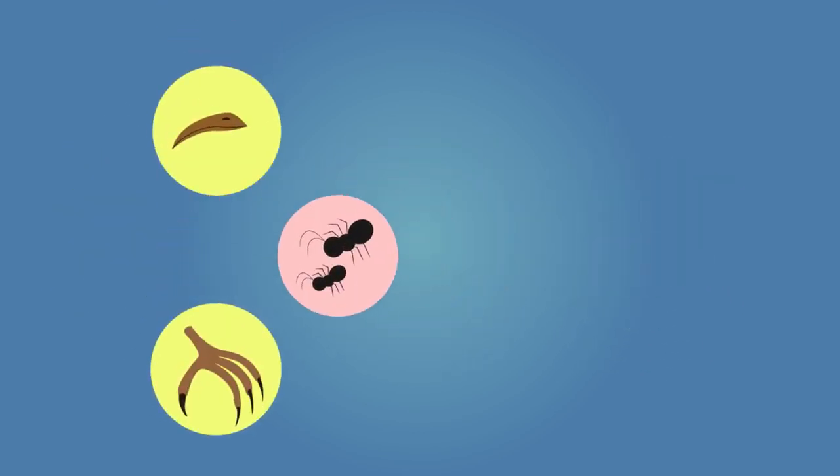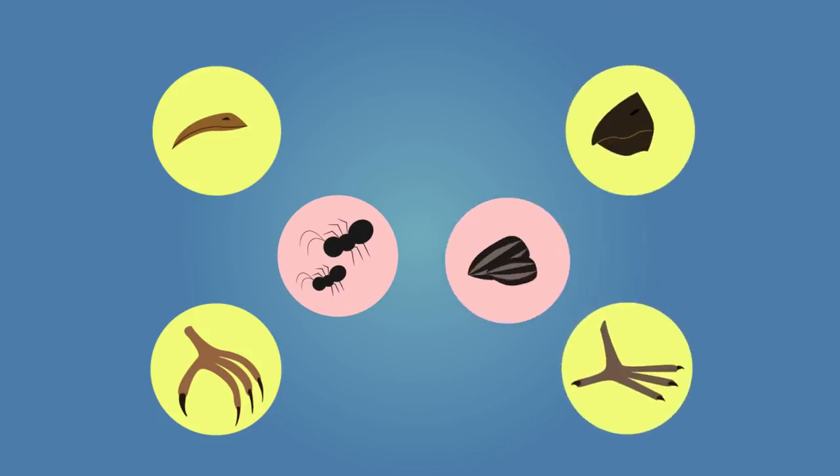Some of the birds had long thin beaks and sharp claws suited to catching and eating insects, while others had large powerful beaks suitable for cracking open nuts.